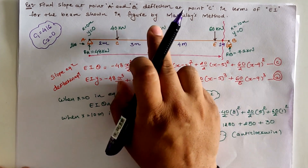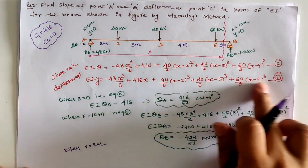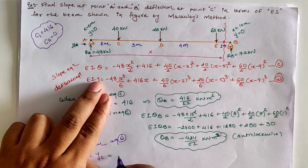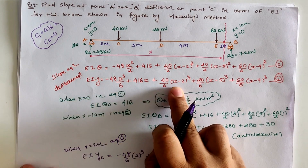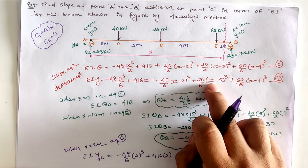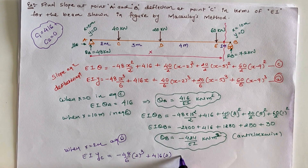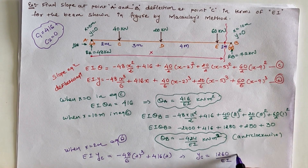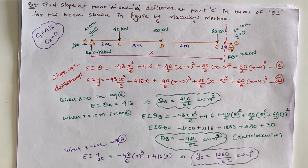For the deflection at location C, we put x = 2 meters into the deflection equation. Here (2−2) = 0, (2−5) = −3 so it is ignored, and (2−9) = −7 so it is also ignored. Solving, we get the deflection at location C = 1260/EI in kilonewton·meter³ units. Thus, we can calculate slope and deflection at different locations using Macaulay's method. Thank you.